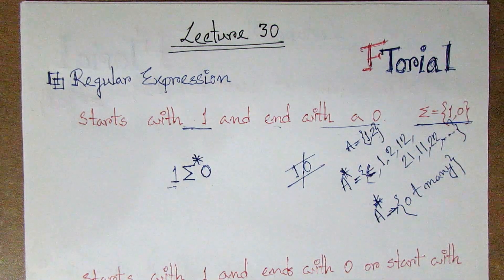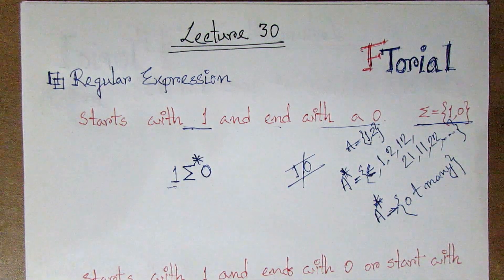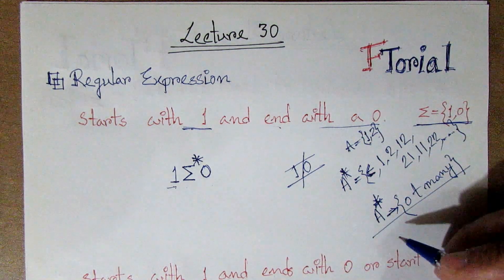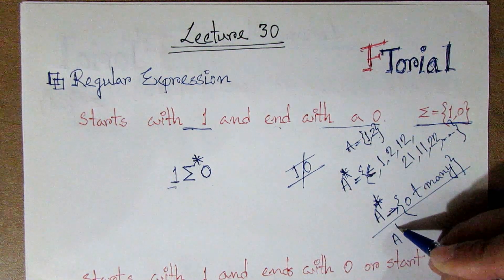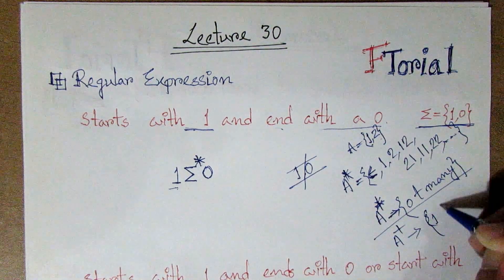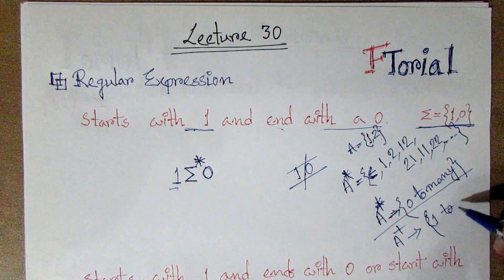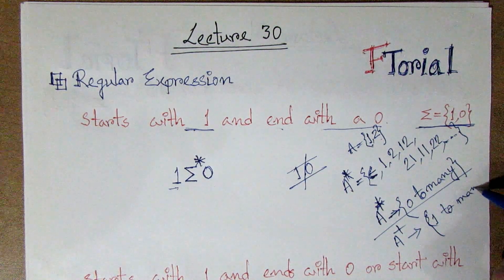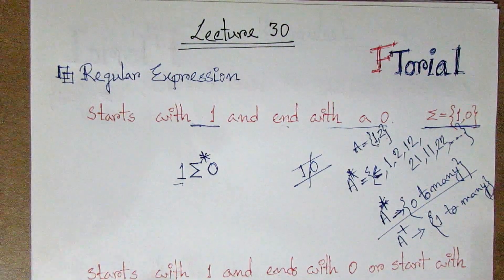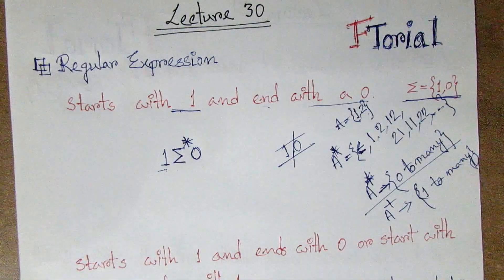0 to many is star, and plus is 1 to many, and at least one should be there. So here we are going to be clear.